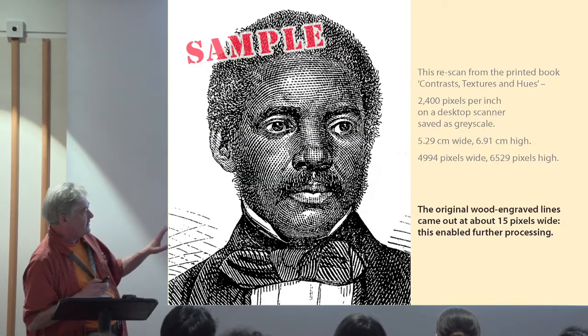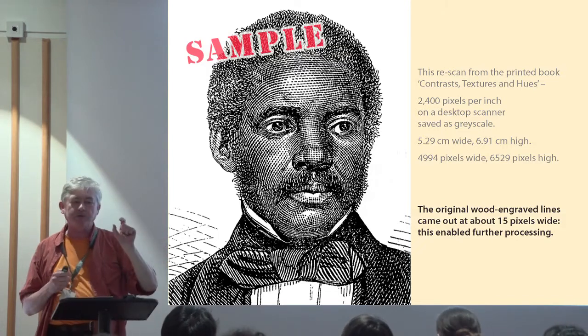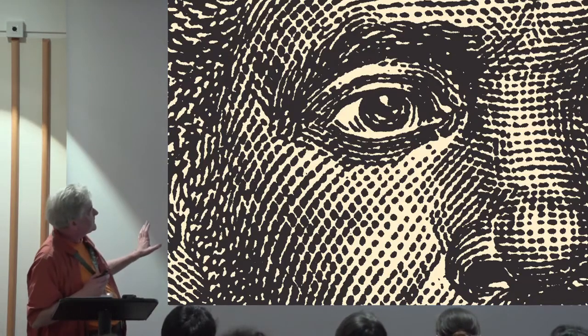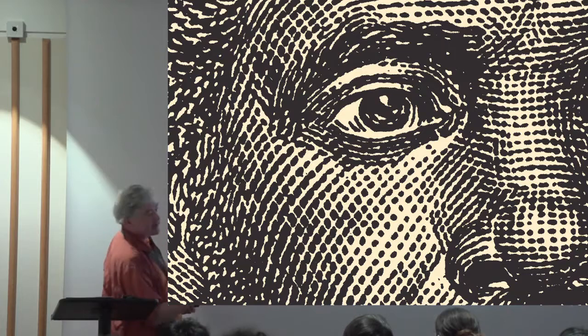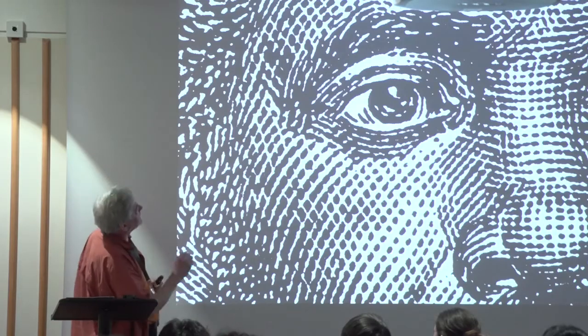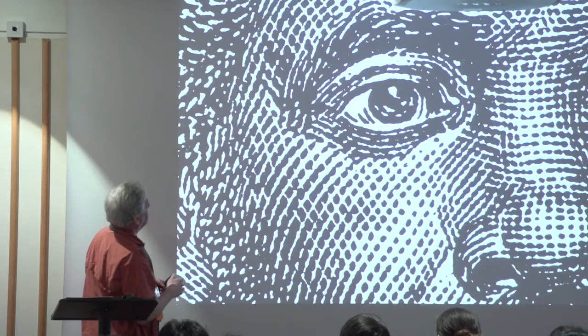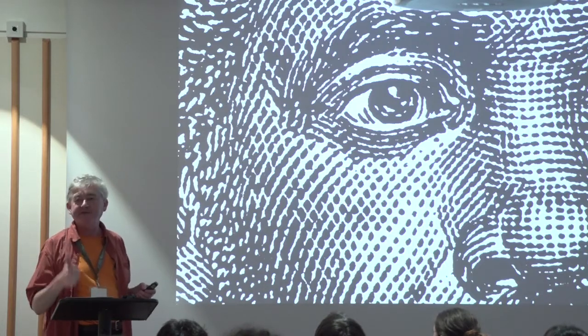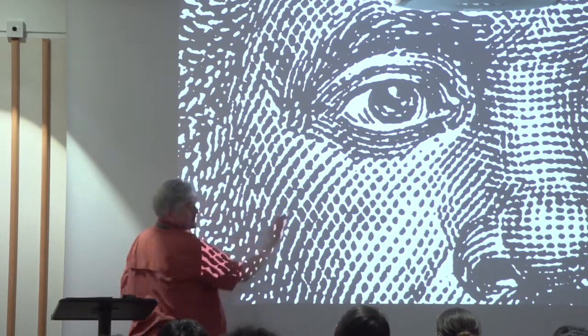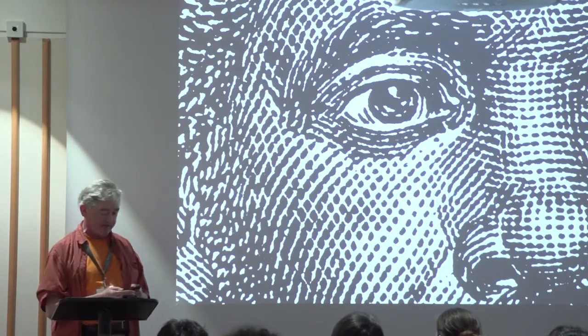When you look at the original wood engraved lines, they came out at about 15 pixels wide with this scan. I want you to admire the skill of these largely anonymous craftsmen who are taking the original drawing and reproducing it by taking a plank of boxwood. Wood engraving is an enhanced technique developed by a Geordie, Thomas Bewick, and you could get very high quality tonal reproduction. The book is about the representation of people of African-Asian heritage, so accurately representing skin tone using these technologies was very important.